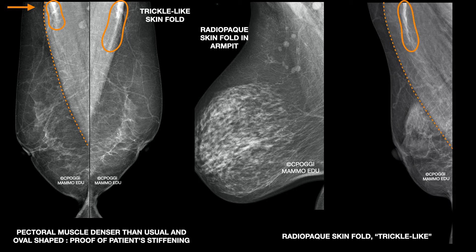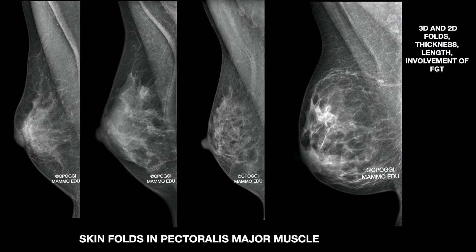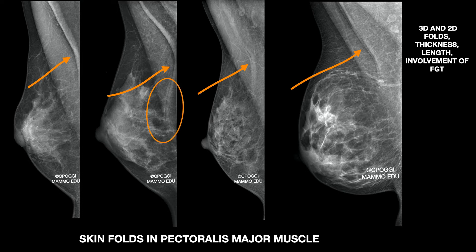This is a typical skin fold due to a not effective stretching of the armpit tissues. Folds in pectoralis major can be of different thickness, length and density. I call folds like these first two '3D folds' because they can include tissue. You can find them usually in women with very lean thorax — if they don't relax, a gap between the thorax and the detector is formed, and the compression leads to the creation of folds. This one is a 2D fold. Check if the glandular tissue is involved — when it happens, the projection usually needs to be repeated.